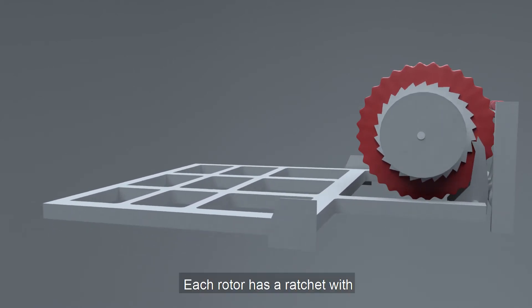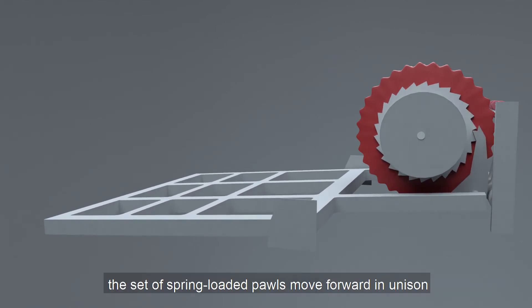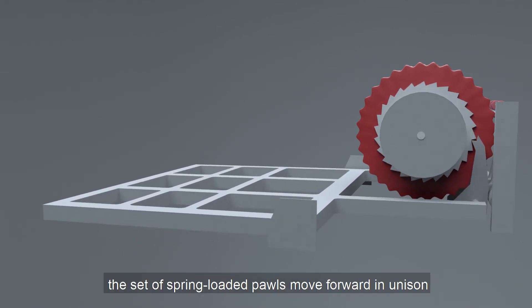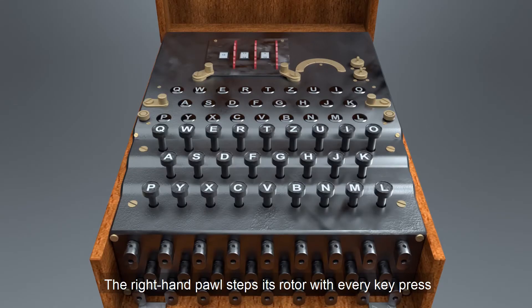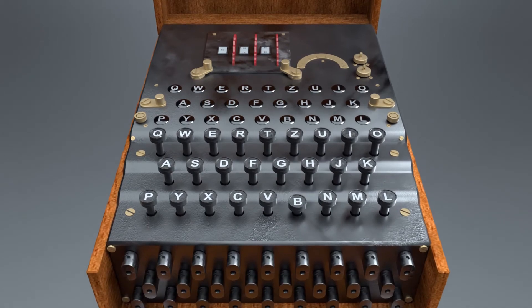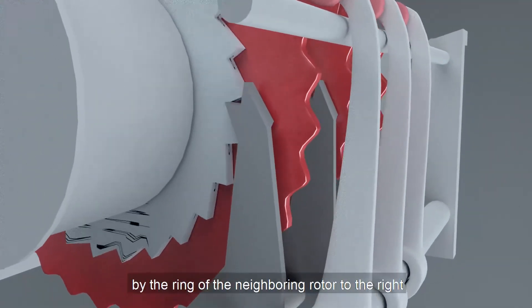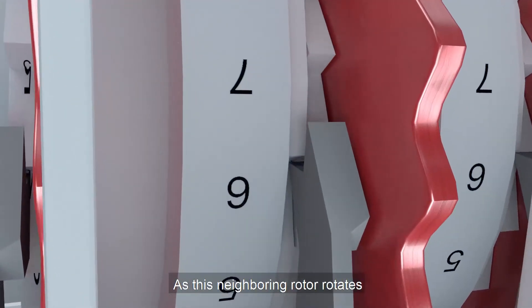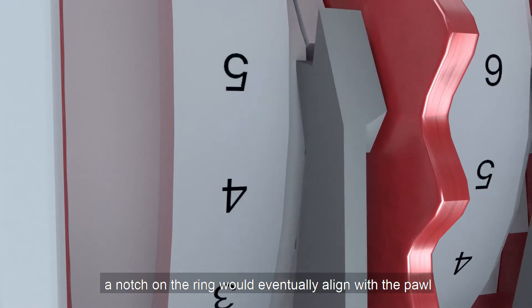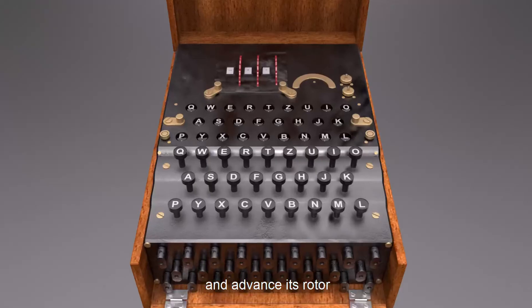Each rotor has a ratchet with 26 teeth and every time a key is pressed, the set of spring-loaded pawls move forward in unison, trying to engage with a ratchet. The right-hand pawl steps its rotor with every key press. Other pawls are normally prevented from engaging with its ratchet by the ring of the neighboring rotor to the right. As this neighboring rotor rotates, a notch on the ring would eventually align with the pawl, allowing it to engage with the ratchet and advance its rotor.